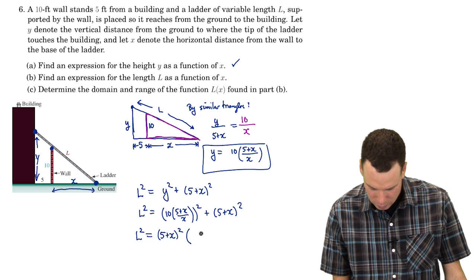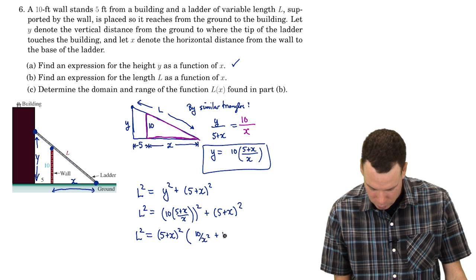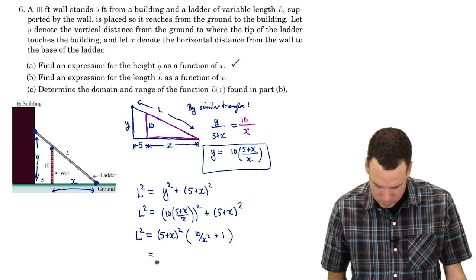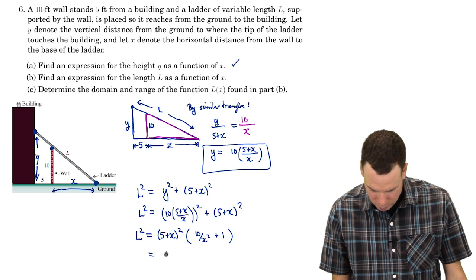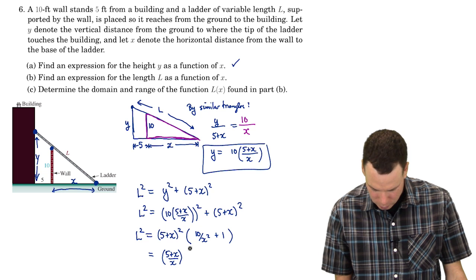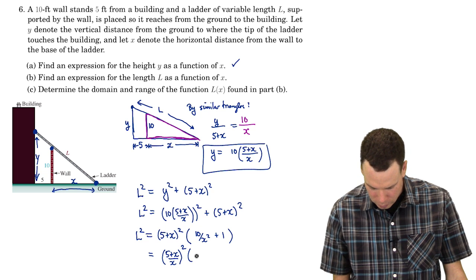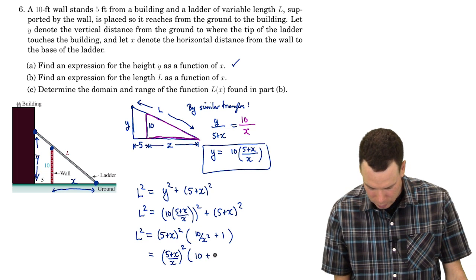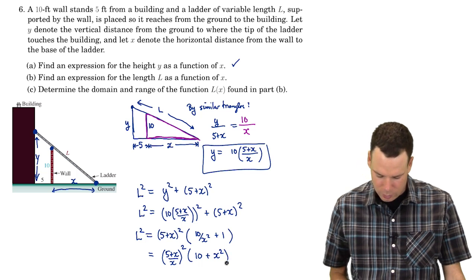What I notice is that I've got a (5 + X)² all squared. That can come out of each of these. So that becomes (10/X)² + 1. I can bring the X² out, leave that a 10 there and then just make that an X² there.